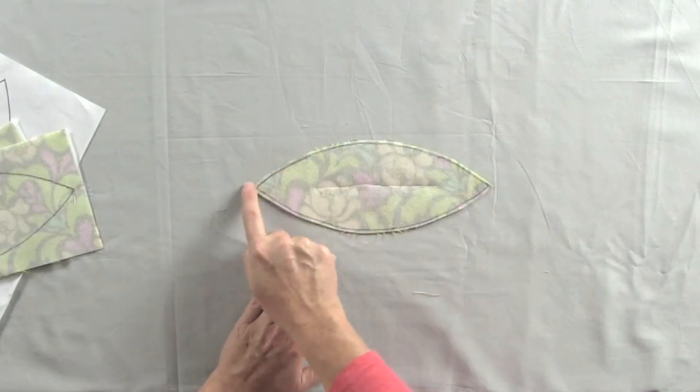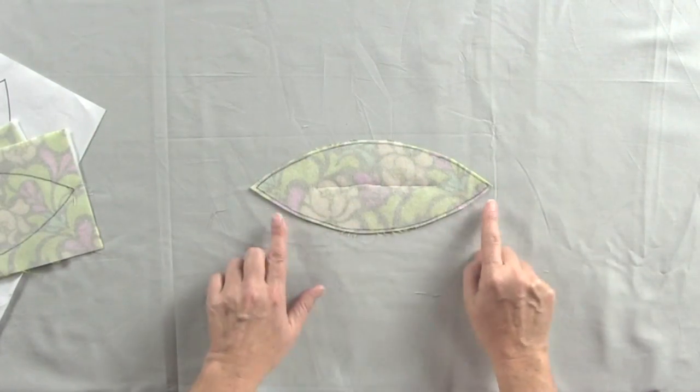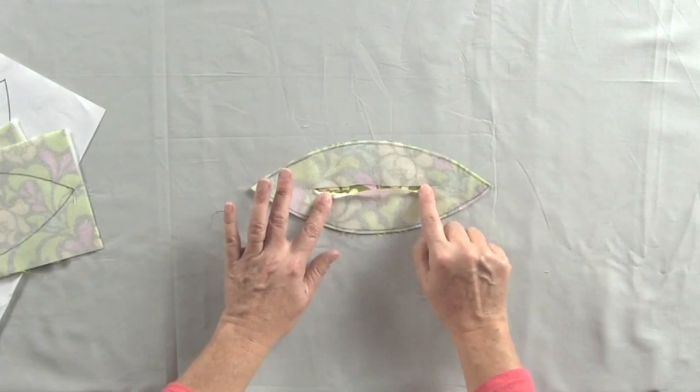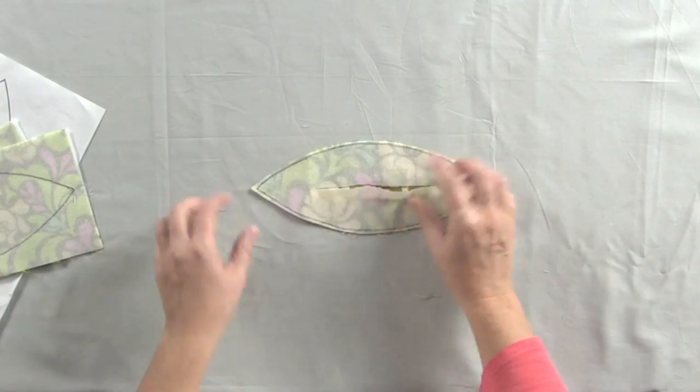Next, you're going to just simply trim about an eighth of an inch beyond the sew line. And you're going to want to cut a slit in your interfacing, but you want to be careful not to cut the background fabric.